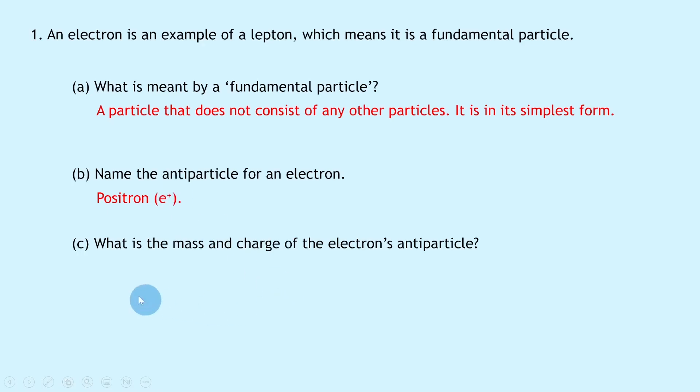And lastly for part c, it says what is the mass and charge of the electron's antiparticle. Well, remember an antiparticle or antimatter particle will have the same mass but opposite charge to its corresponding particle. The antiparticle for the electron, i.e., the positron, will have the same mass but opposite charge to the electron.